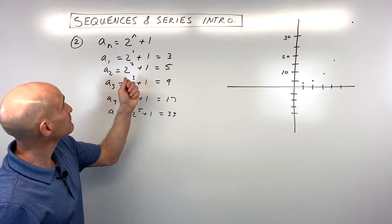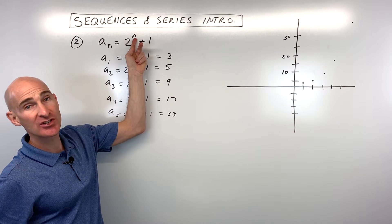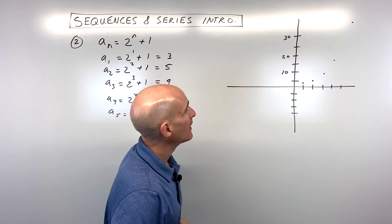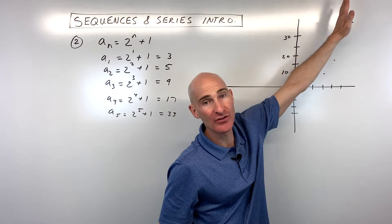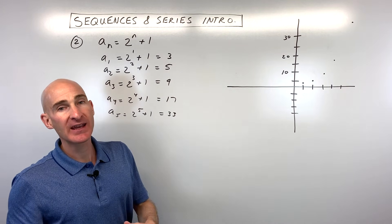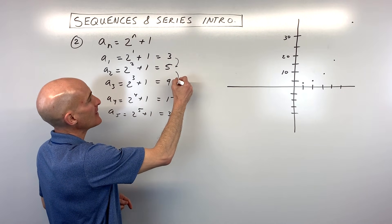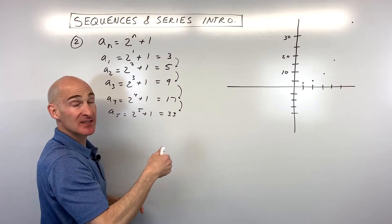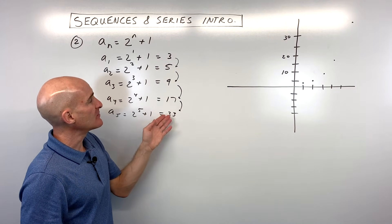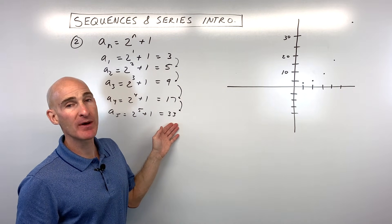Now what you'll notice on this one, see how that variable is in the exponent position? This is an exponential function. So you can see it's growing faster and faster like that. And so this one is not arithmetic. It's not geometric. Geometric is when you're multiplying by the same number each time to get to the next term in the sequence. But you can see it's not like we're adding the same thing each time. That would be arithmetic. We're not multiplying by the same number each time. That would be geometric.